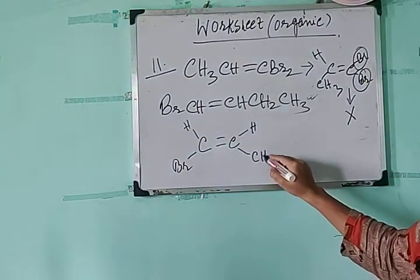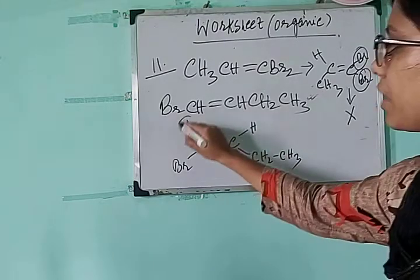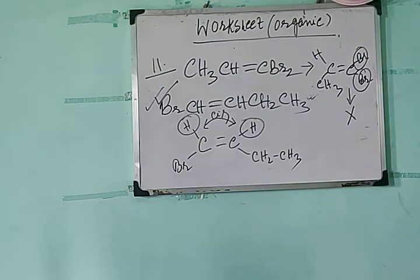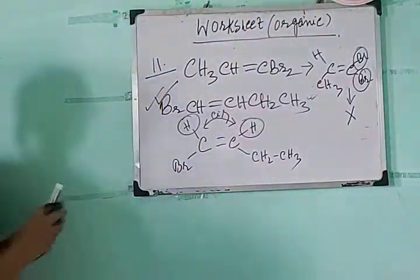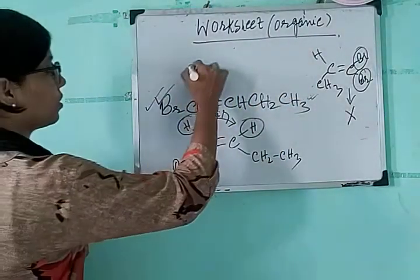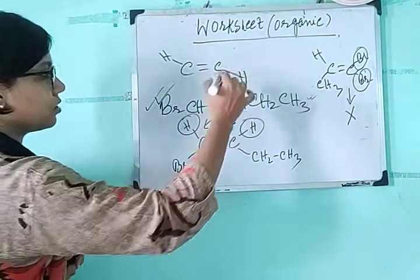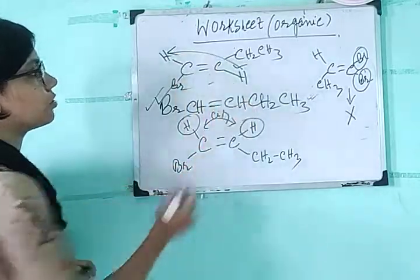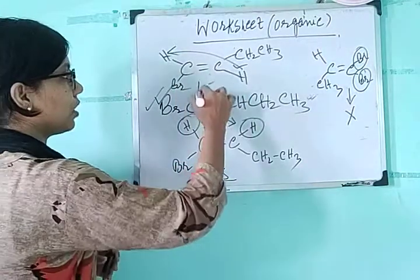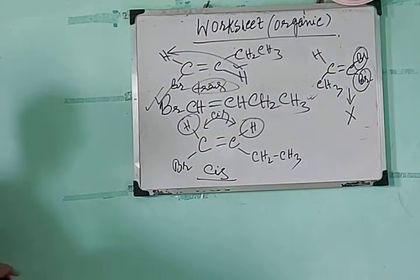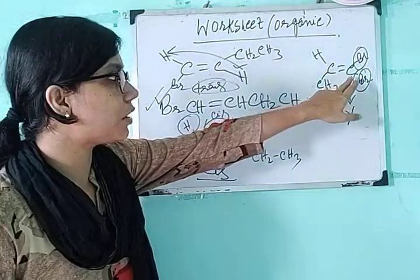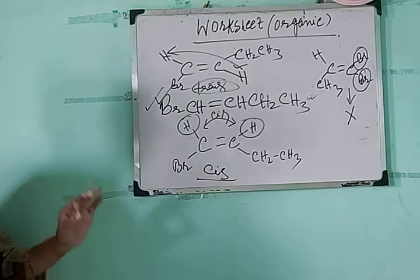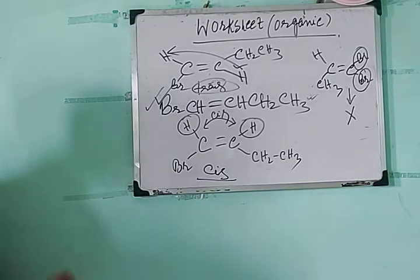For the second structure CH=CH with CH₂CH₃, the two hydrogen atoms can be on the same side — that is the cis form — or on opposite sides — that is the trans form. So this molecule can exhibit geometrical isomerism. However, the first structure CH₃CH=CBr₂ has two same groups (two Br) on one carbon atom, so it cannot exhibit geometrical isomerism.